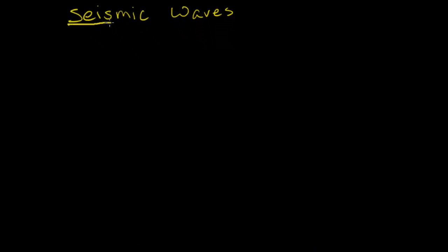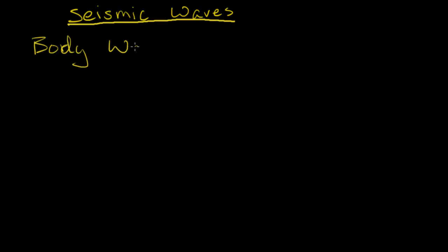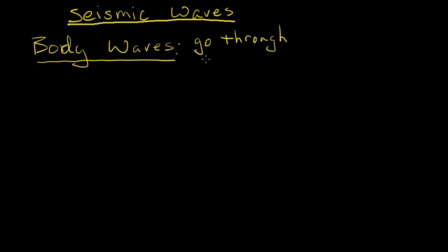In this discussion of seismic waves, I'm going to talk about some of the basic features of the main types of seismic waves. The first set are called body waves. Body waves, as the name might suggest, are waves that go through the Earth, as opposed to just on the surface of the Earth.